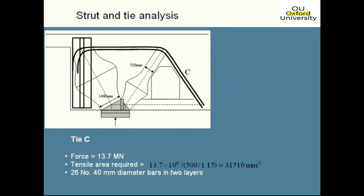The CTT node at the top had a stress limit of 14.3 MPa — slightly higher than the 13.4 MPa strut limit, so the strut governed. Finally, the tie was designed by dividing the tie force by the design yield strength, 500/1.15 for γ_s, giving a steel area of 31,510 mm², equivalent to 26 number 40-diameter bars. The contractor preferred this over a beam-theory approach, which would have required impossible quantities of links.